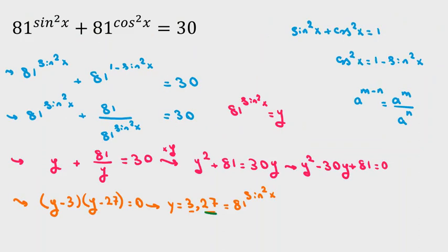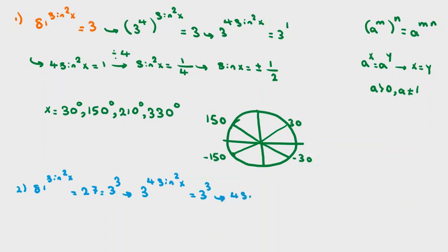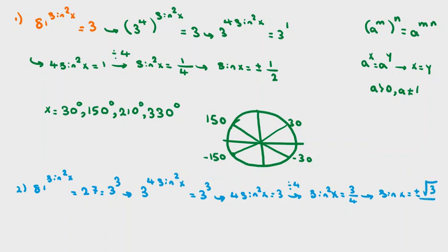Case 2: 81 to the power of sine squared x equals 27. Since 27 equals 3 cubed and 81 equals 3 to the 4th, we get 3 to the power of 4 sine squared x equals 3 cubed. So 4 sine squared x equals 3. Dividing both sides by 4, sine squared x equals 3 over 4, therefore sine x equals plus or minus root 3 over 2.